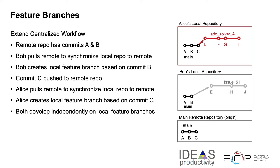Bob also downloaded a copy of the repo to his local machine and started a branch to work on issue 151, but he apparently downloaded earlier and started from commit B of the main branch, then added commits E, H, and J. At this point in time, the remote repository has a main branch with commits A, B, and C. Their development causes a divergence from main and from each other, but can be merged for collaboration since they are using separate branches.